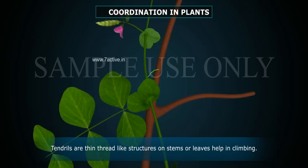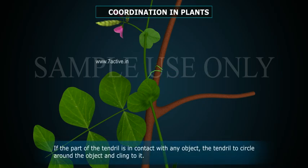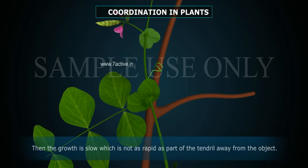Tendrils are thin, thread-like structures on stems or leaves that help in climbing. If part of the tendril is in contact with any object, the tendril circles around the object and clings to it. The growth on the side in contact is slower, which is not as rapid as the part of the tendril away from the object.